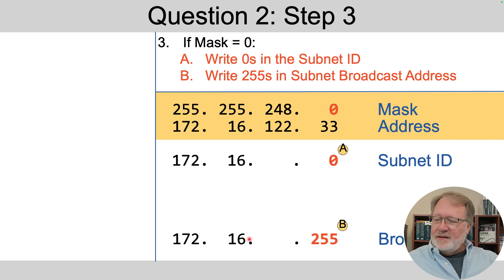Then at step three, this time there is a mask octet with a value of zero, the fourth octet. So in that case, we write a zero. We don't copy, we write a zero for the subnet ID value, and we write a 255 for the broadcast address value. Now we finished three of the octets, but of course the third octet is yet to be filled in because its mask value is 248. It's neither a zero nor a 255.